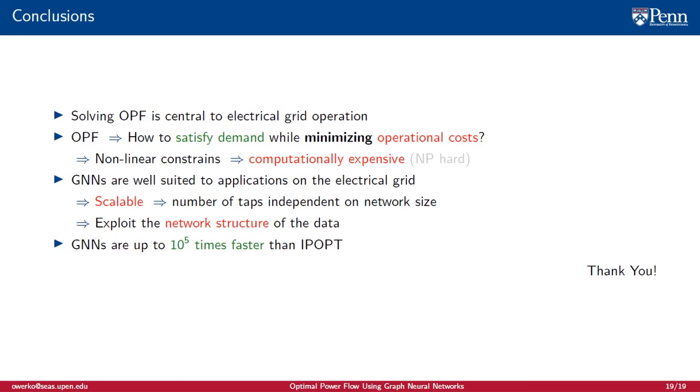Optimal power flow is a fundamental problem in energy grid management. It answers the question, how to satisfy demand while minimizing operational costs. Unfortunately, non-linear constraints make it a difficult problem to solve. GNNs are well-suited to applications on the electrical grid. They are scalable, since the number of filter taps is independent of network size. They also exploit the network structure of the data. GNNs are capable of accurately predicting the solution to optimal power flow. Moreover, they do so dramatically faster than it takes to run traditional methods. Thank you for your time.